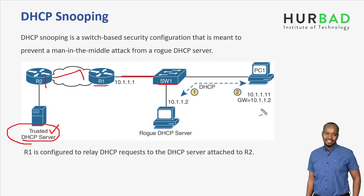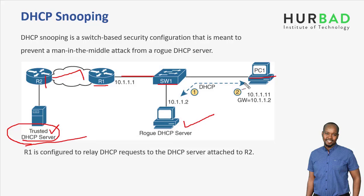The switch is connected to the PC. The PC also gets an IP address, which comes from the DHCP server. You can see the switch connected to DHCP, and the switch also acts as the DHCP server.